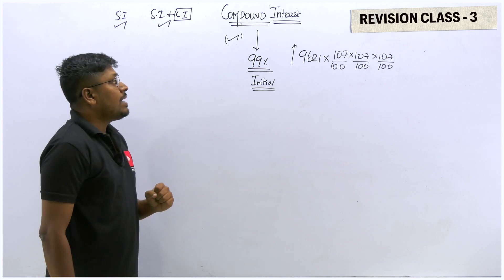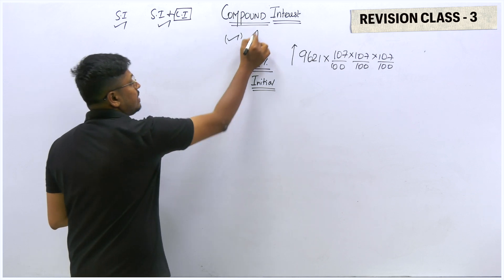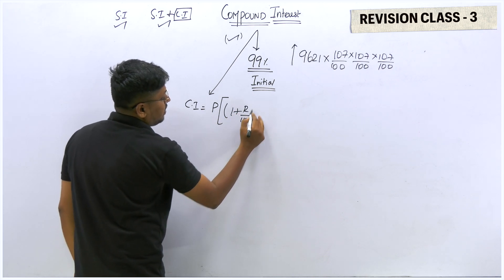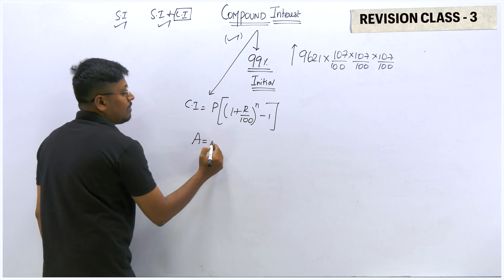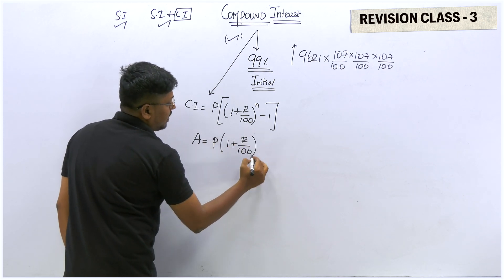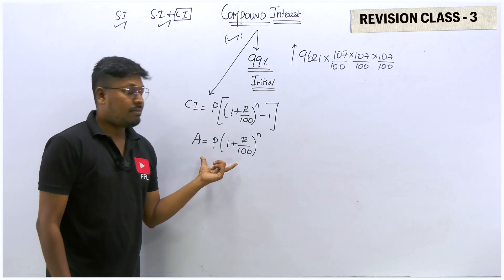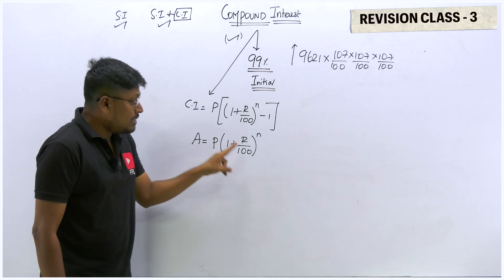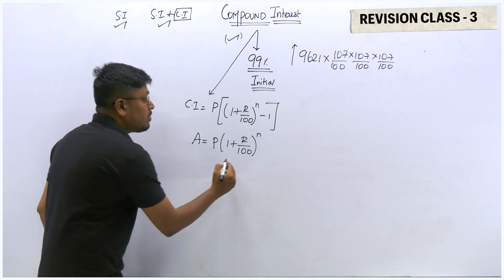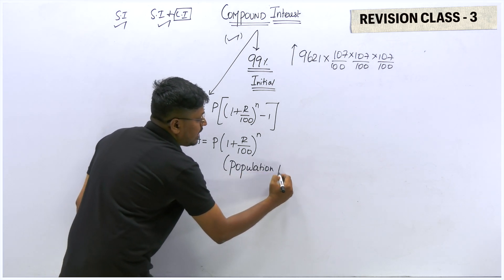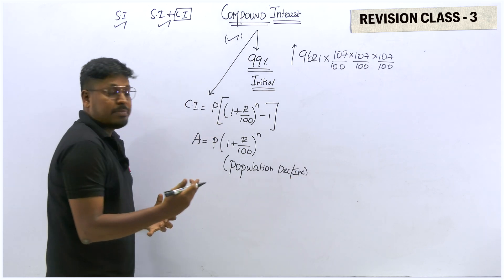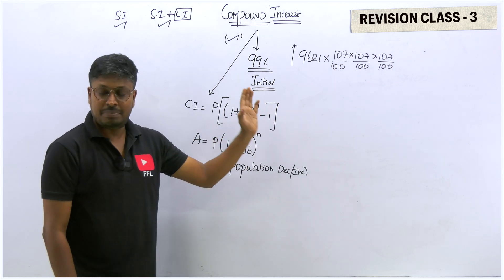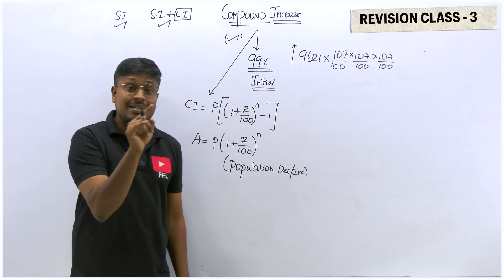Now, getting into the concepts of compound interest. There are two important formulas, just like in simple interest. First: Compound Interest = P × (1 + r/100)^n − 1. Second: Total Amount = P × (1 + r/100)^n. The first gives only the compound interest; the second gives the total amount including principal and interest. The same formula is also used in the concept of population increase and population decrease.